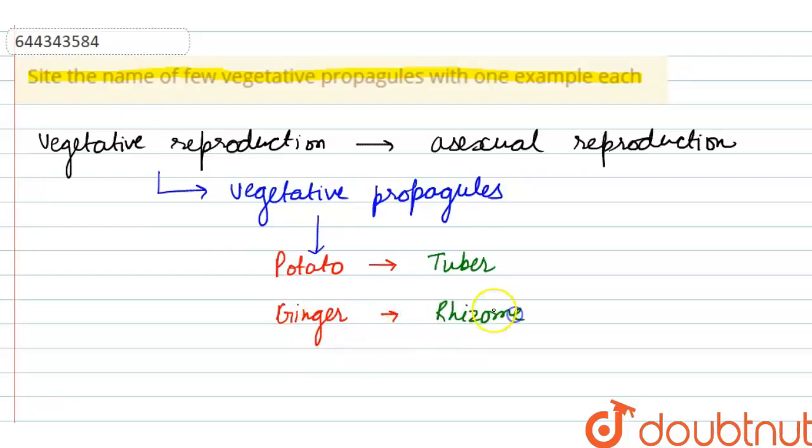If we talk about bryophyllum, then the vegetative propagules is leaf bud as the bryophyllum is developed by leaf bud. And if we talk about agave, then it is developed by bulbels.